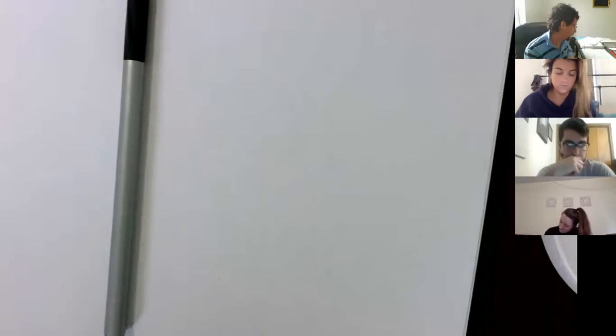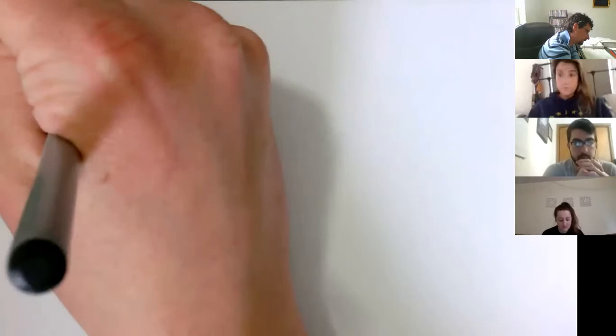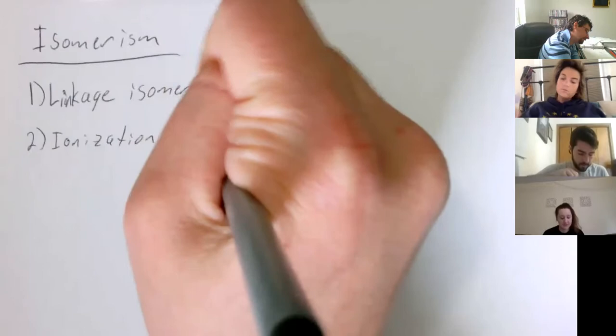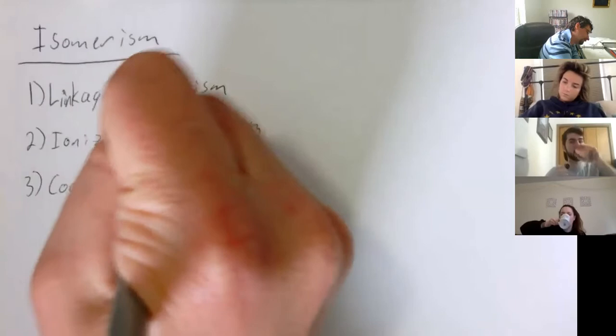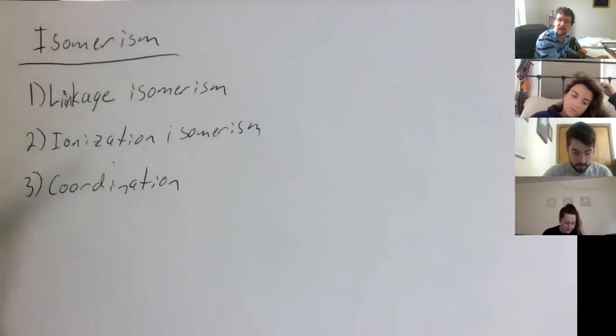So last time we were talking about isomers in inorganic chemistry. We discussed three or four types of isomerism so far. Can you tell me what types of isomerism we have talked about so far? We have linkage, ionization, and coordination. Could you describe the differences between these or what they are?